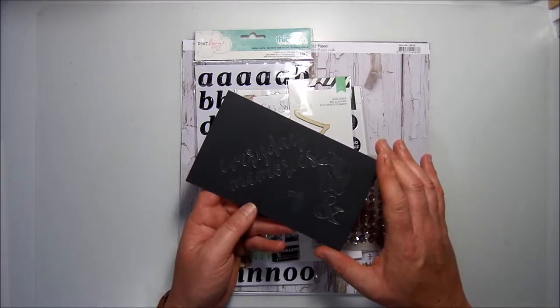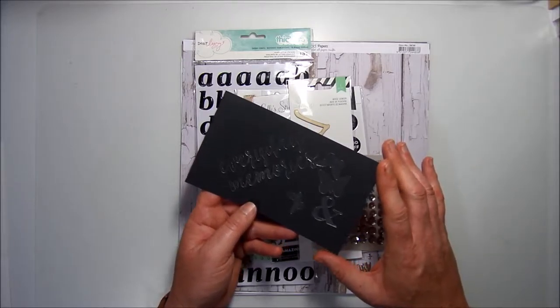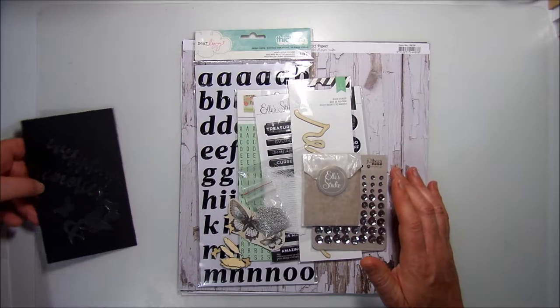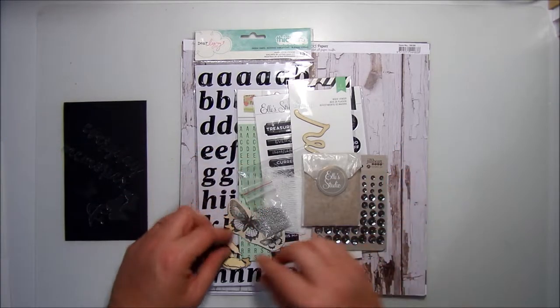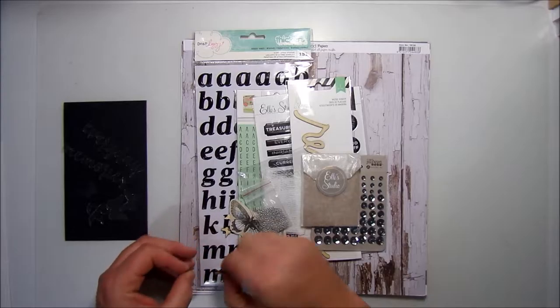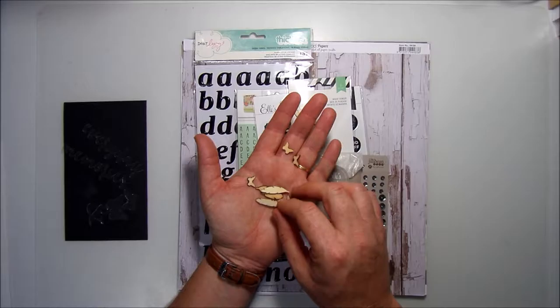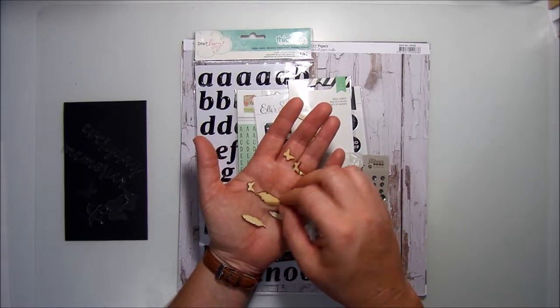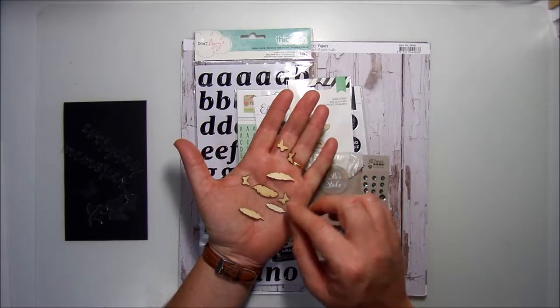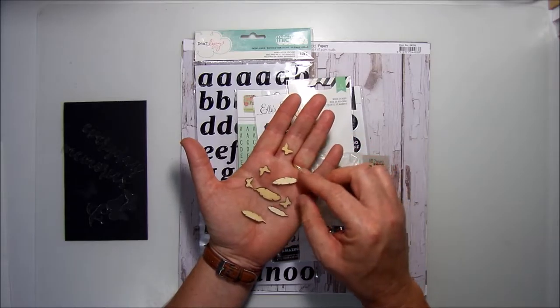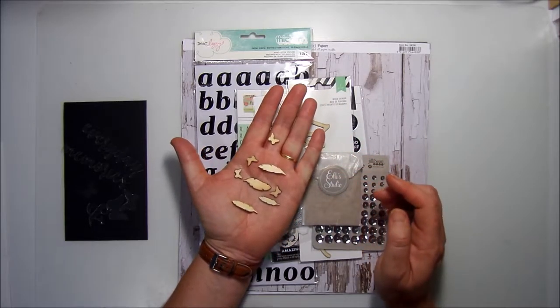We also have by jelly bean soup the little wooden embellishments. So we've got some wooden shapes, some feathers and some butterflies as you can see.